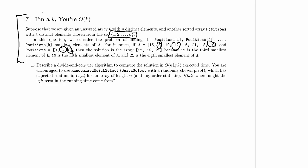Welcome to Computer Science 320 2014 Winter 2 Midterm 2 Practice Problem screencast number 7.1. The task is to describe a divide-and-conquer algorithm to compute the solution in O(n log k) expected time. We're encouraged to use randomized quick select — quick select with a randomly chosen pivot — which has expected runtime in O(n) for any array of length n and any order statistic.